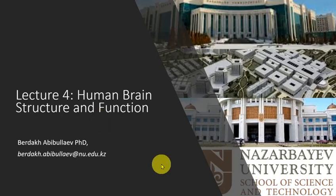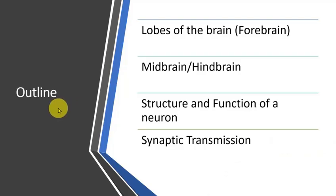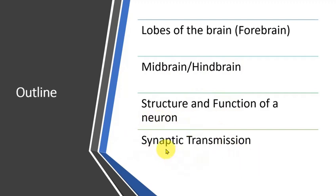Hello students, welcome to lecture 4. In this lecture we will review human brain structure and its function. The outline of today's lecture is as follows: first, we will see different lobes of the brain, midbrain and hindbrain. We will also discuss structure and the function of a neuron, and in the last part we will see synaptic transmission procedure and define what synaptic transmission is.